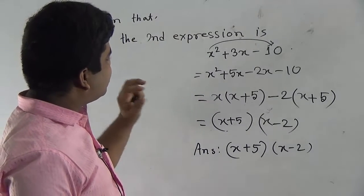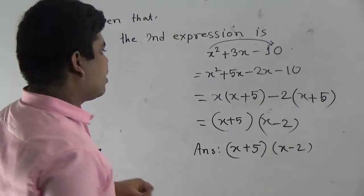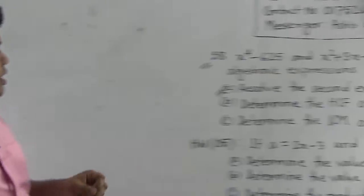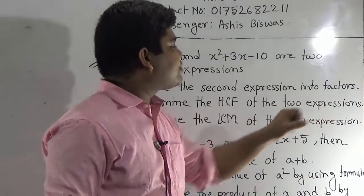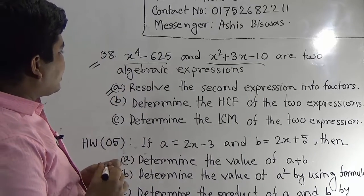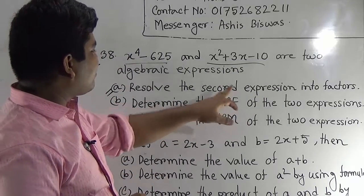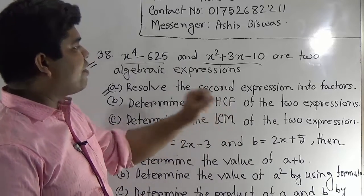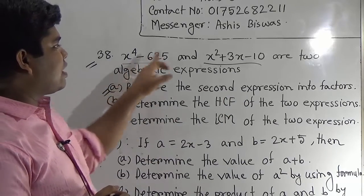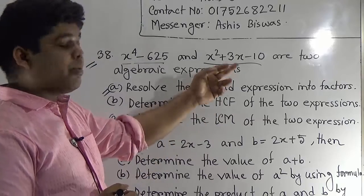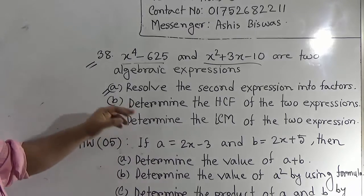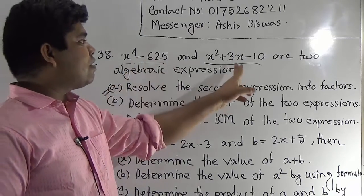I erase question A and start to solve question B. My students, notice: determine the HCF of the two expressions. There are two expressions — expression one and expression two. Even though you could take the second expression's factors from A, the question carries marks, so you must solve both the first expression and the second expression fully. Don't just write from A.